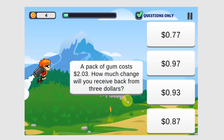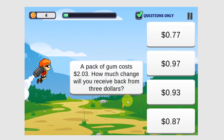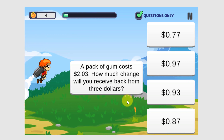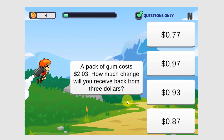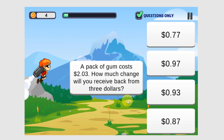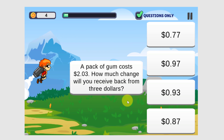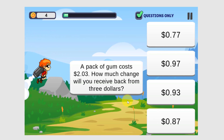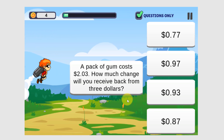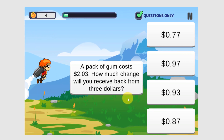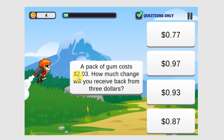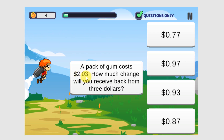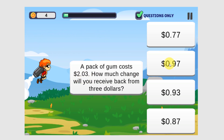A pack of gum costs $2.03. How much change will you receive back from $3? If you need a paper and pencil, go ahead and use that. $3 minus $2.03 is $0.97.